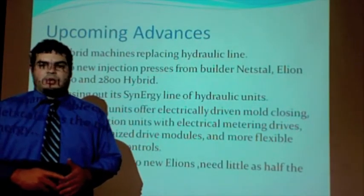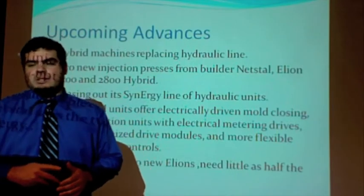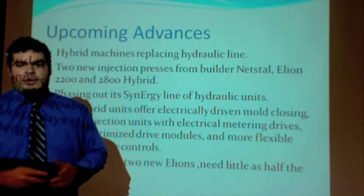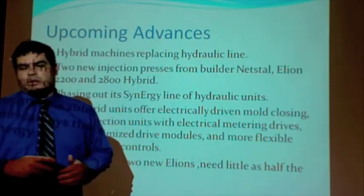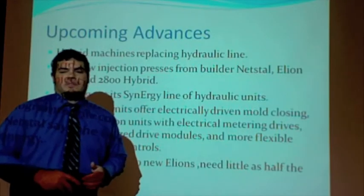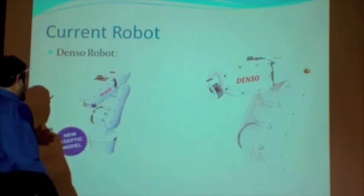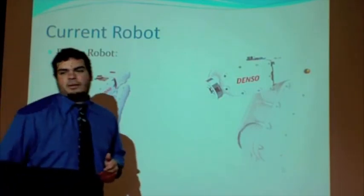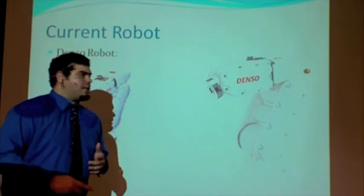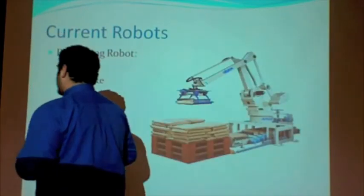Upcoming advances include hybrid machines replacing hydraulic robots. Two new injection models from the builder NETSTAL — the ELION 2200 and 2800 hybrid — are phasing out the synergy line and hydraulic units. These new hybrid units are electrically driven and use electrical metering drives; NETSTAL says they will use half the energy of hydraulic robots. Here is a picture of the aseptic dental robot unit, which can be sterilized with hydrogen peroxide. Another current clean room robot is the palletizing robot, which can palletize food, medicine, or anything needed — it is clean, accurate, and causes no damage.